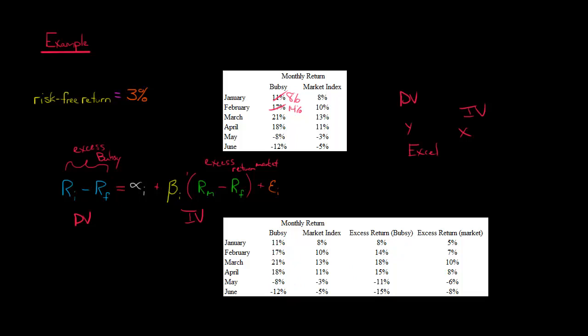Our excess return for the market is our independent variable, and then we've got our dependent variable. We're trying to say, in layperson's terms, how do changes in this variable predict changes in this variable? How do changes in the excess return of the market predict changes in the excess return of Bubsy?